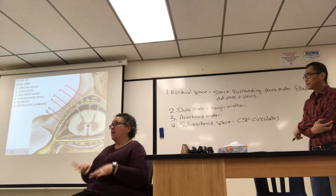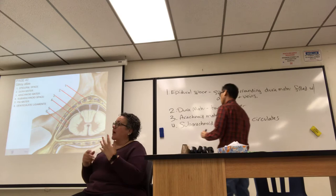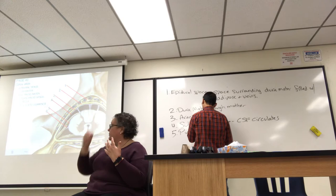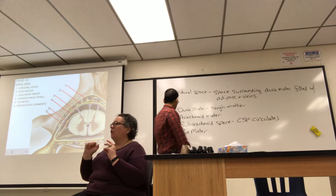The subarachnoid space is where CSF circulates — CSF bathes the central nervous system. Number five is the pia mater. Number six is the denticulate ligament inside the vertebral foramen, which provides lateral support for the spinal cord.